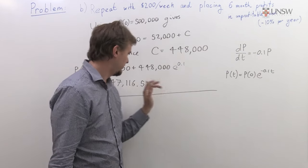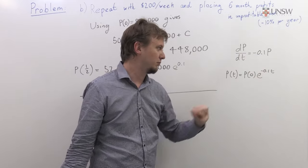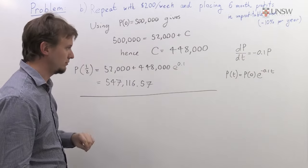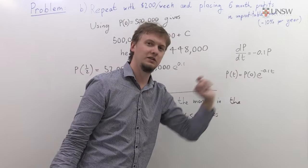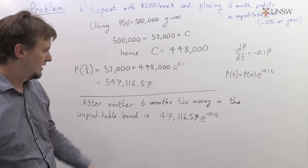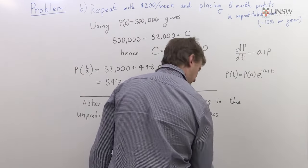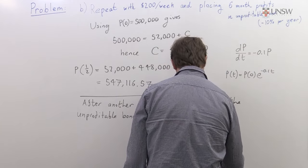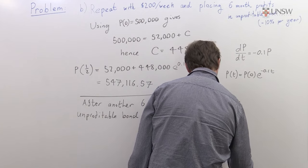If we just take our 47,000, put it into this equation and run it forward for half a year, so t equals a half, we get the following. I've just used this solution and plugged in t equals a half. You can use the calculator to work that out. It turns out to be about $44,818.67.